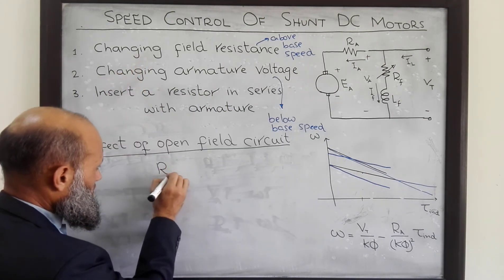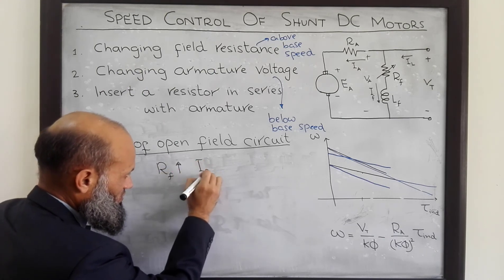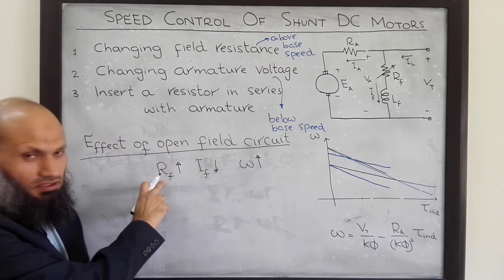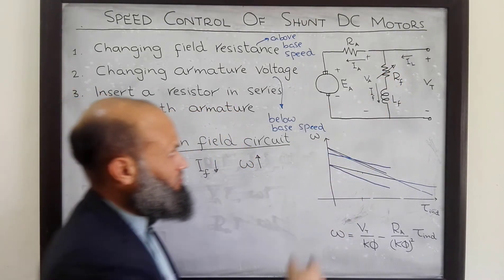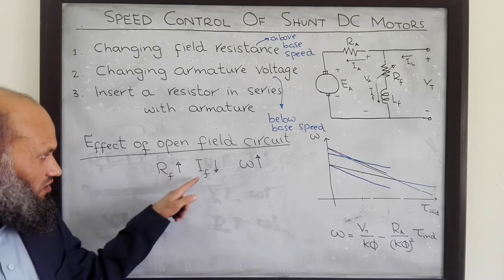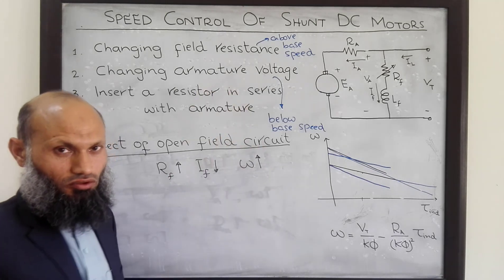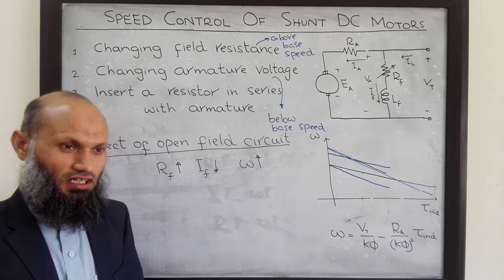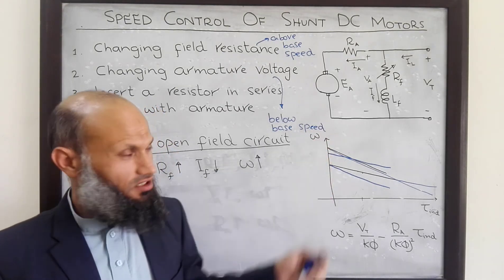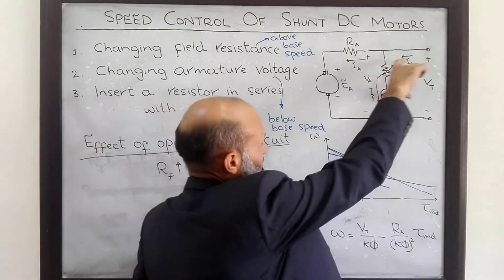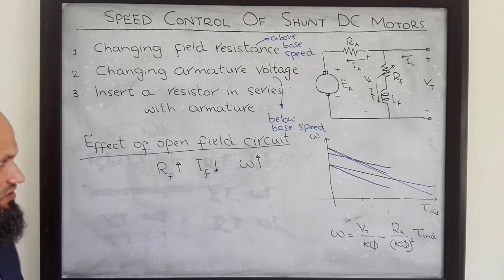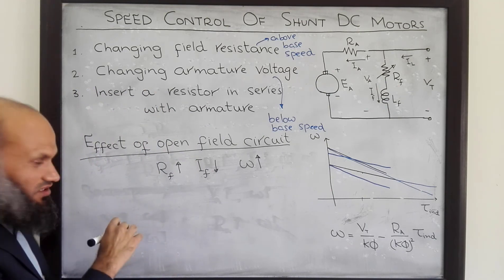Increasing RF results in a decrease in field current and thereby an increase in speed. If the field circuit is opened — that is, the connection is lost — then RF approaches infinity, field current approaches zero, and speed approaches infinity. Practically, the motor will gain very high speed and therefore be damaged mechanically. Therefore in larger DC motors there is always an arrangement to disconnect the motor from the power supply when the field circuit gets opened. We shall discuss that arrangement when talking about starter circuits for DC motors.